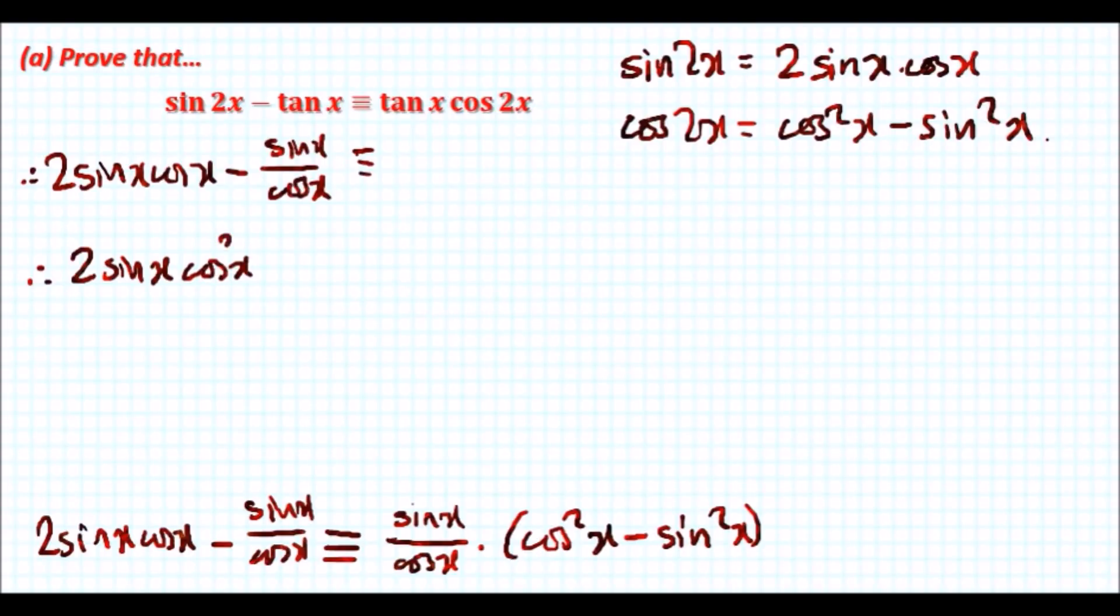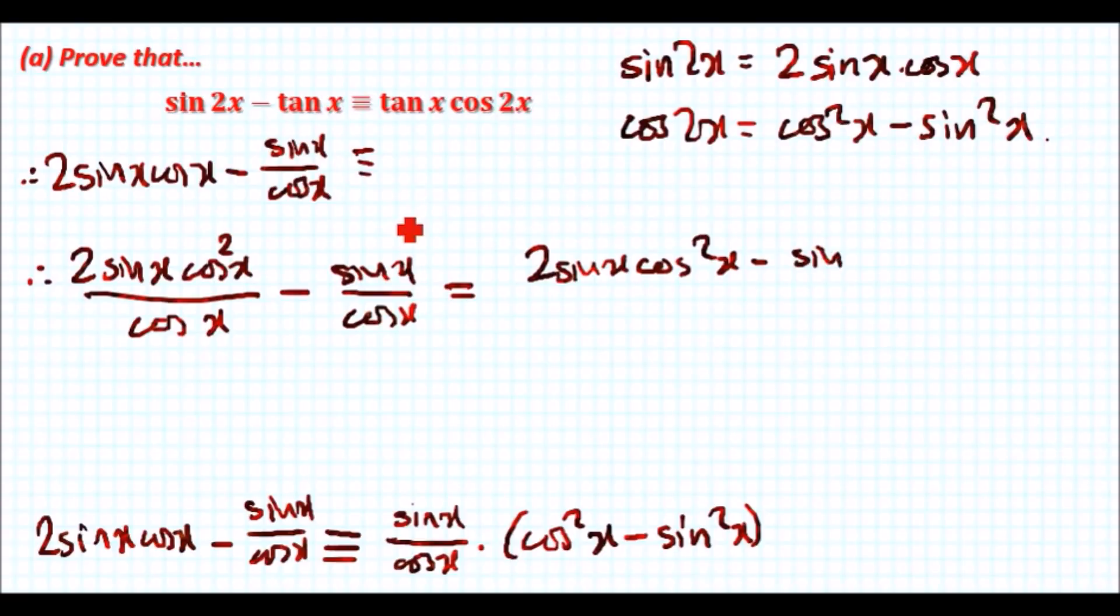There's 2 sin x by cos up and down, so we should have 2 sin x cos x because there's an extra cos x would be cos x squared all over cos x and now minus sin x over cos x. Not so bad so far.